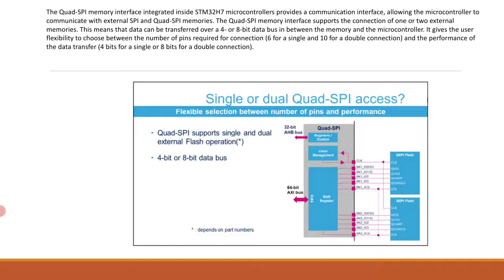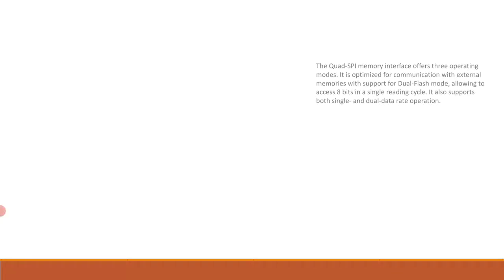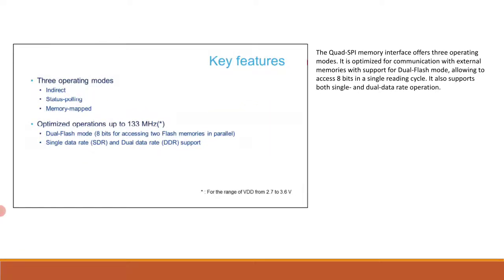Some key features include three operating modes: indirect, status polling, and memory mapped. It is optimized for communication with external memory, with support for dual flash mode allowing access to eight bits in a single read cycle. It also supports both single and dual data rate operation, with a VDD range of 2.7 to 3.6 volts.